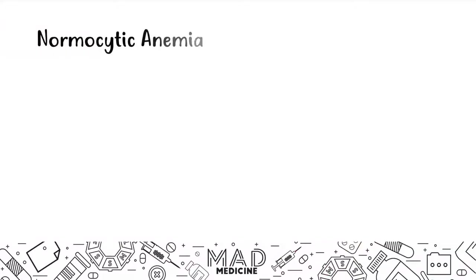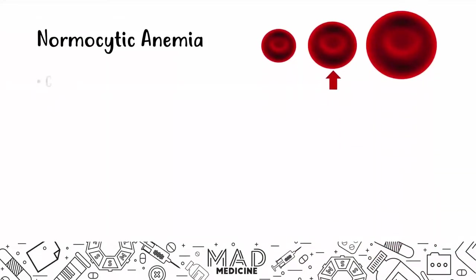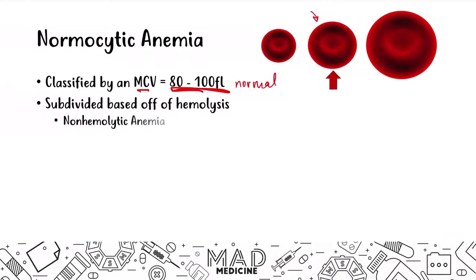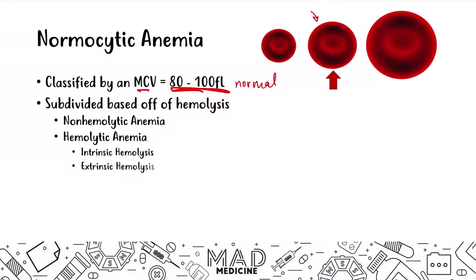Let's talk about normocytic anemias quickly. Normocytic anemias are classified by an MCV that is normal — 80 to 100. As you can see with the photo, we have an arrow pointing to a normal size cell. They are subdivided based on hemolysis: non-hemolytic and hemolytic anemias. The hemolytic anemias are further subdivided based on intrinsic and extrinsic causes.